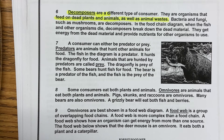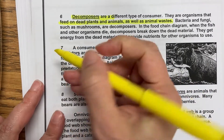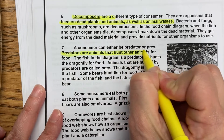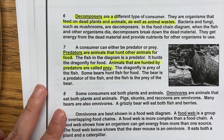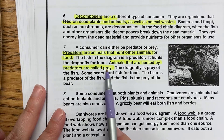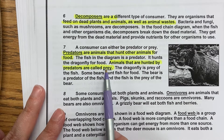Paragraph seven: A consumer can either be a predator or prey. Predators are animals that hunt other animals for food. The fish in the diagram is a predator — it hunts the dragonfly for food. Animals that are hunted by predators are called prey. The dragonfly is prey of the fish. Some bears hunt fish for food. The bear is a predator of the fish and the fish is the prey of the bear. So we have two vocabulary words: predators are the hunters and the animals that are hunted are called the prey. When I used to teach third grade, one way I taught them to remember this is that the prey animals better pray that they don't get caught because they're going to get eaten — that helped them remember those were the ones in danger.